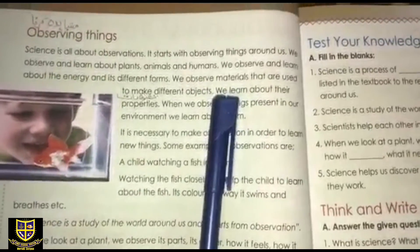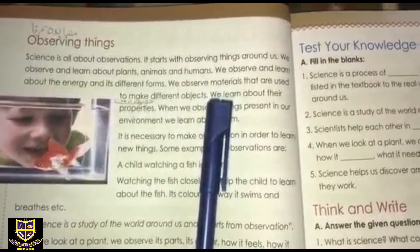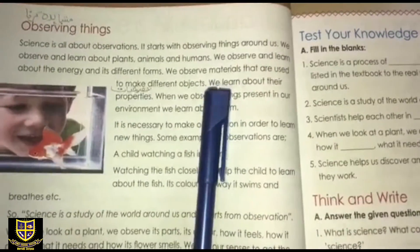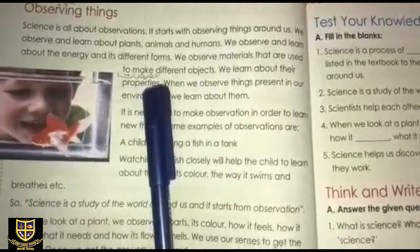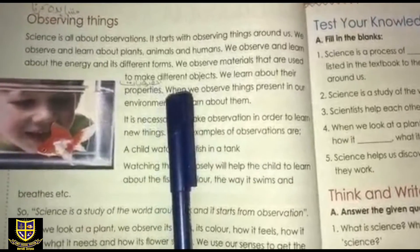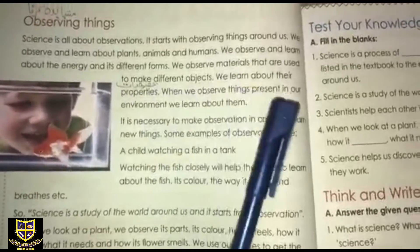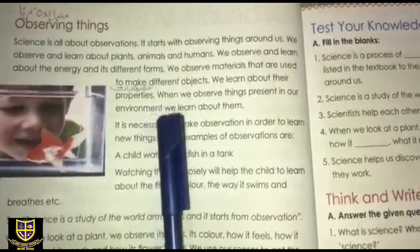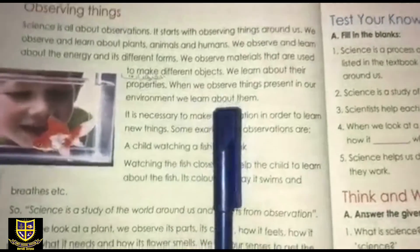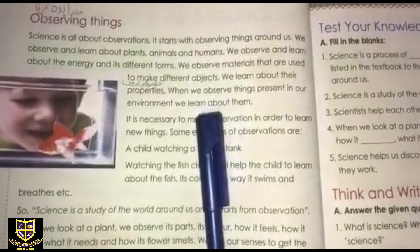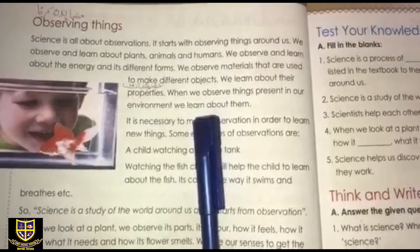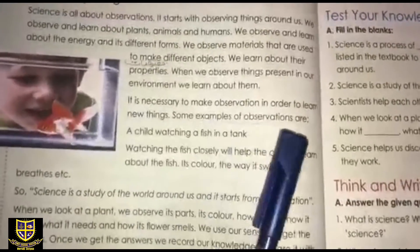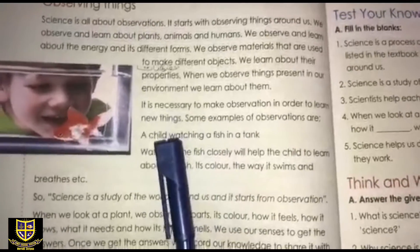For example, plastic toys and steel beds — what do we observe? We learn about their properties and think about their properties. When we observe things present in our environment, we learn about them. It is necessary to make observations in order to learn new things.